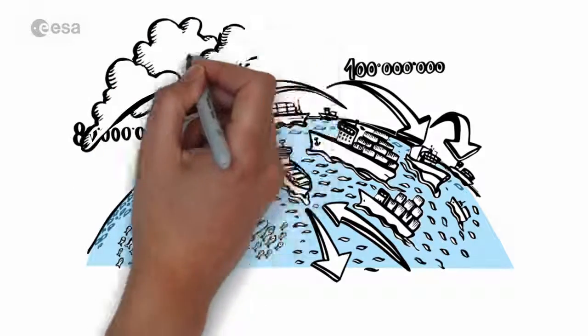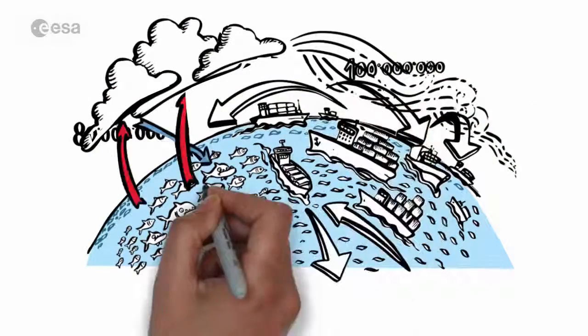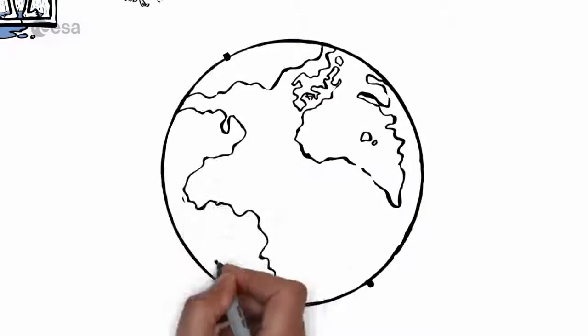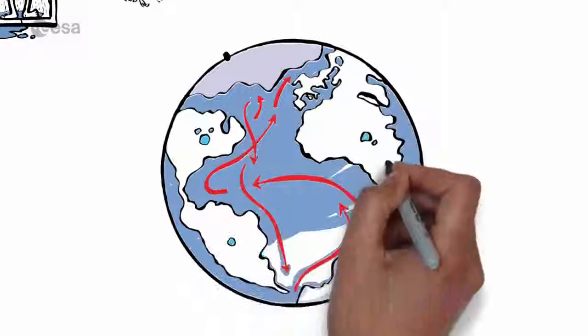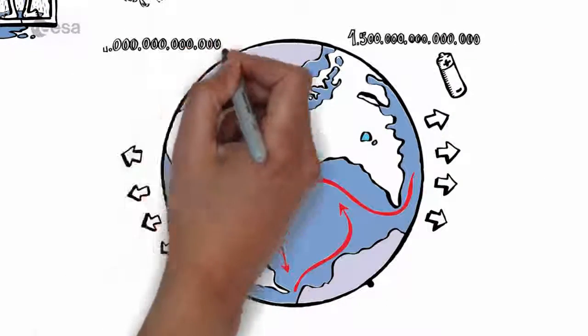The oceans may seem distant but their role is so important in how our climate evolves. Ocean currents shuffle 1.5 million gigawatts of energy around the globe and a trillion liters of ocean water evaporate into the atmosphere every single minute.